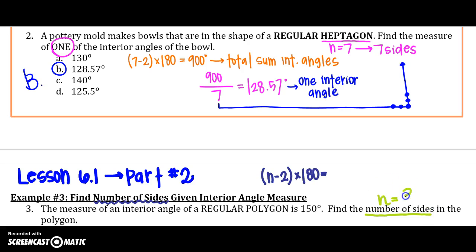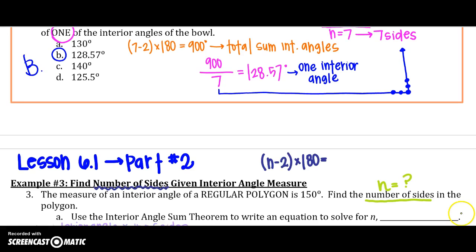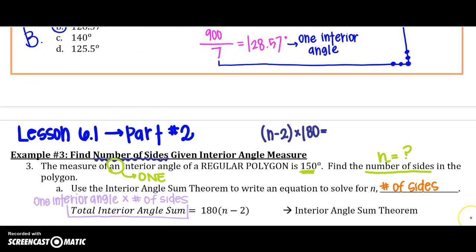So now we need to solve for n. Now the big thing we have to read here is an interior angle, which means just one. One interior angle of this figure is 150 degrees. So what can we do with that? In part a, we need to use the interior angle sum theorem to write an equation to solve for n, which is the number of sides. So still using that same equation, it was the total interior angles equals 180 times n minus 2 or n minus 2 times 180. And if you break down that total interior angle sum, it really is one interior angle times the number of sides. That's really how you get the total interior angle sum.